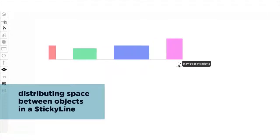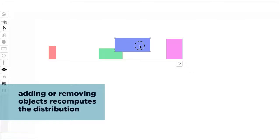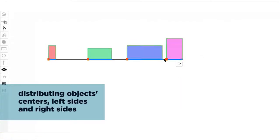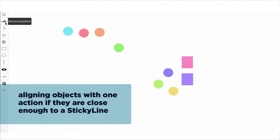A sticky line can also distribute objects evenly, and redistribute them when the user removes or adds objects. When objects are roughly aligned, creating a sticky line aligns them.